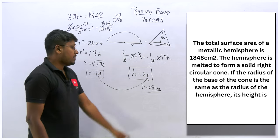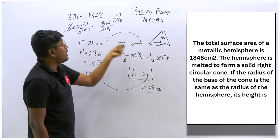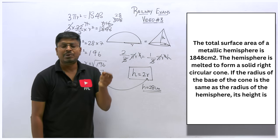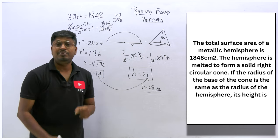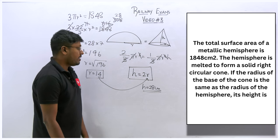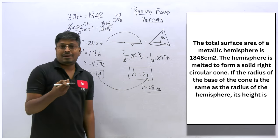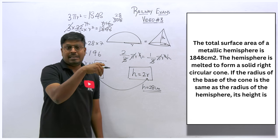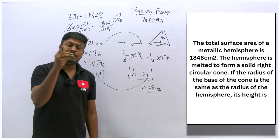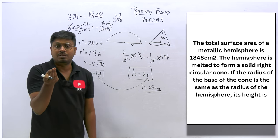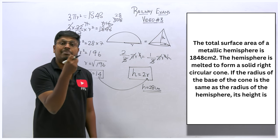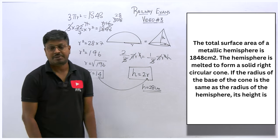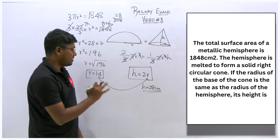Our target was to find the height. Since the radius was unknown, we used the total surface area clue (1848 cm²) to find r = 14 cm, then got h = 28 cm. Whenever you can't solve a question, write the formula first, check for melting concept, and look for clues in the question to find missing values. The answer for question three is 28 cm.